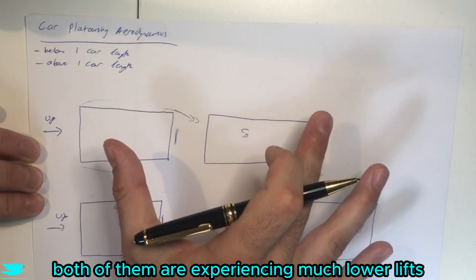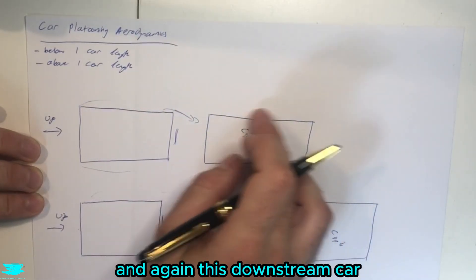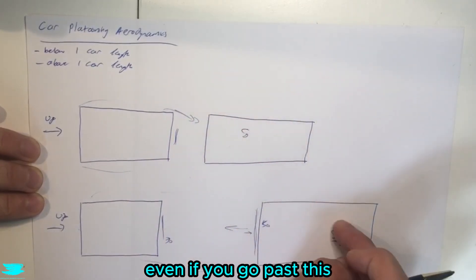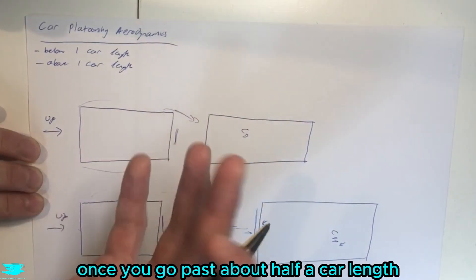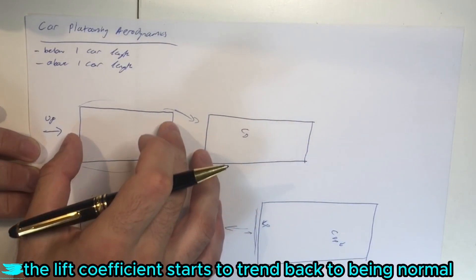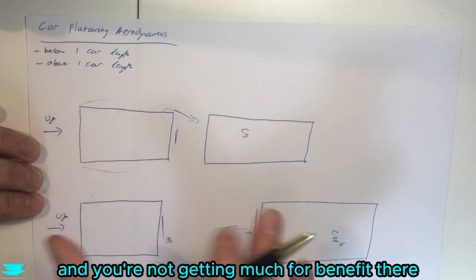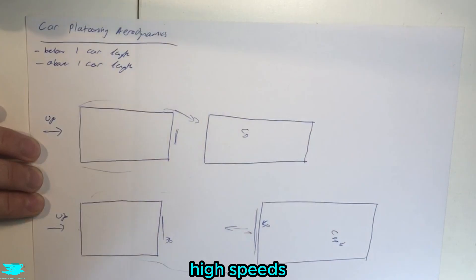As for the lift, both of them are experiencing much lower lifts. And again, this downstream car, the lift is always being reduced, even if you go past this one car length downstream. Whereas this upstream car, once you go past about half a car length, one car length downstream, the lift coefficient starts to trend back to being normal, and you're not getting much of a benefit there, at least in terms of cutting down that lift coefficient to make it more stable at high speeds.